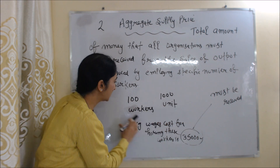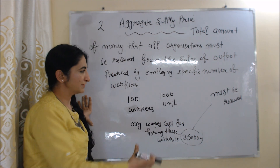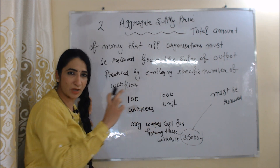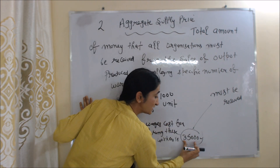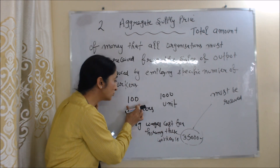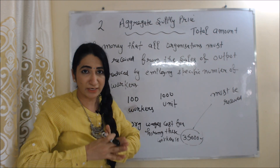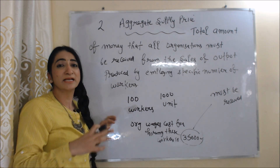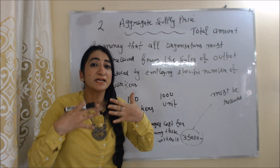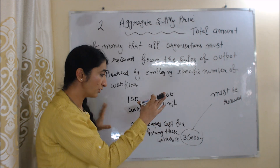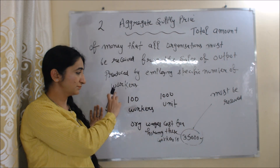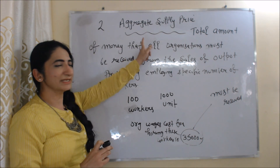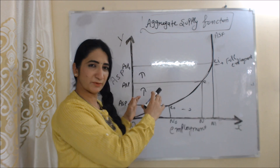For example, here we have 100 workers, and the output produced by them is 1,000 units. The organization's wage cost for hiring these 100 workers is 35,000 rupees. If an organization is not able to receive 35,000 rupees from the sale of output produced by these 100 workers, then the employer will not hire more employees — they will even terminate existing employees. That is why the employer must receive this minimum amount, and this 35,000 rupees is called aggregate supply price.